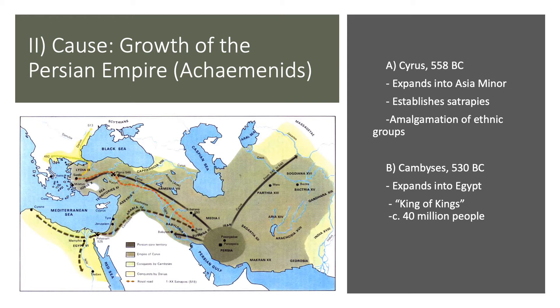Under Cyrus's son Cambyses, expansion continues — Cambyses takes Egypt, which still has its own government but acknowledges Cambyses's overlordship. At its height, the Persian Empire probably had as many as 40 million people subject to its authority, covering 10 percent of the world's geography — a vast amount of territory under a single authority, actually larger than Rome would ever become.